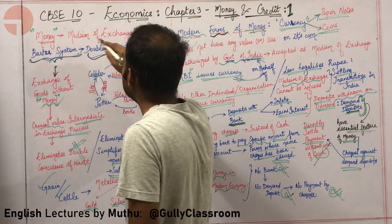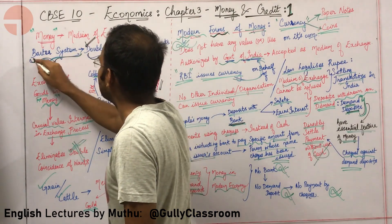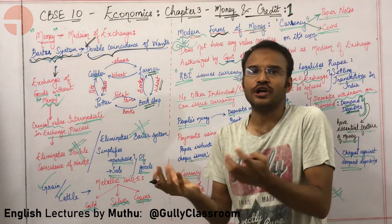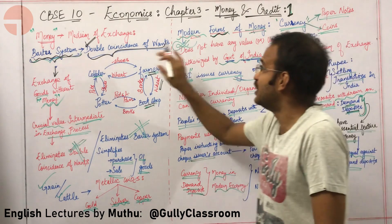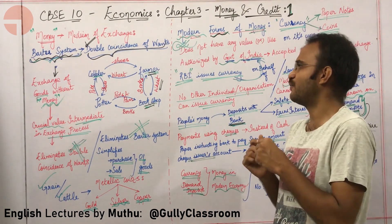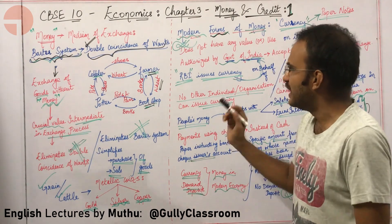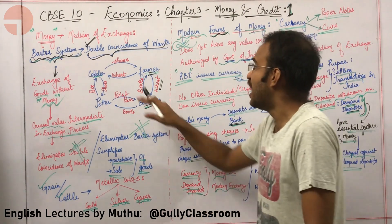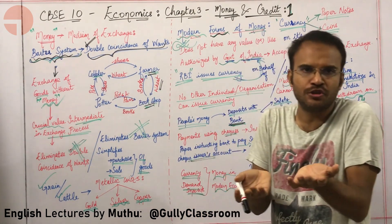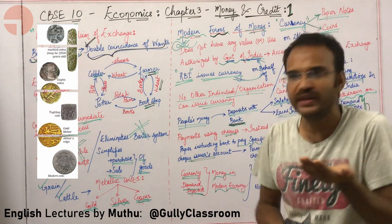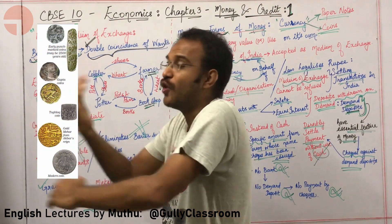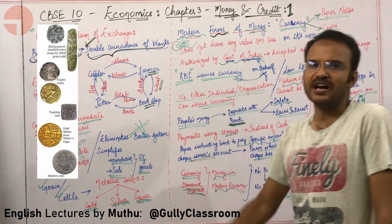Such a situation is called double coincidence of wants. The double coincidence of wants is an essential condition for the barter system to work. In order to exchange goods, double coincidence of wants is an essential idea. For example, there is a cobbler who wants wheat and a farmer who wants shoes. The farmer will simply take some of his wheat, go to the cobbler, and exchange it for shoes — which the farmer needs.